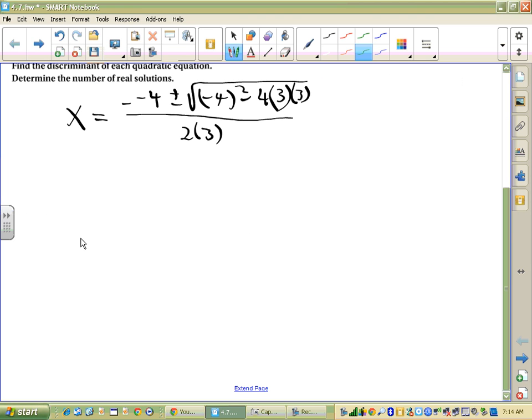And then the next step, we simplify, and we get 4 plus or minus the square root of 16 minus 36 over 6. And then if you got it to this next step here, that's pretty good, 4 plus or minus the square root of negative 20 over 6.